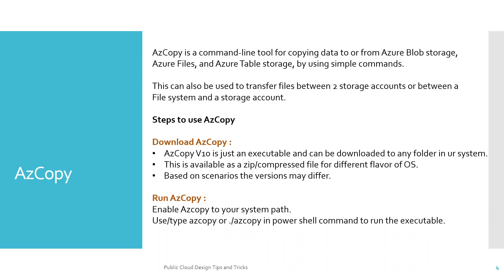Before you start using AzCopy, there are certain steps you need to follow. The first is to download AzCopy — the latest version is available as an executable and can be downloaded to any folder on your system. The executable is available in a zip or compressed format for different flavors of OS, and based on different scenarios and the topology you want to use, you may need a different version.